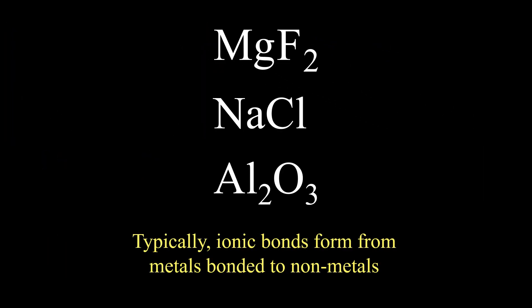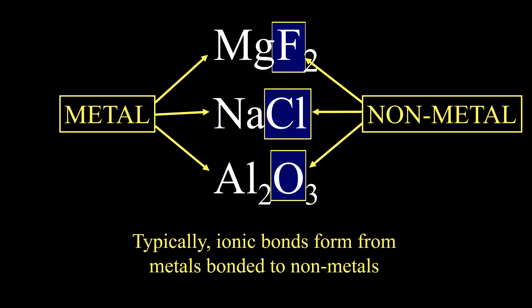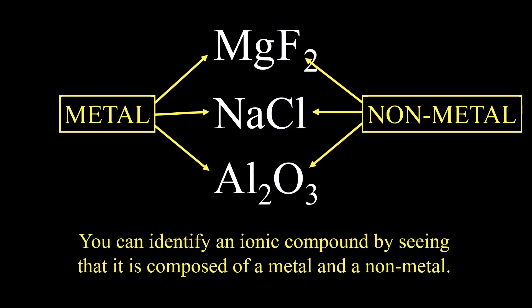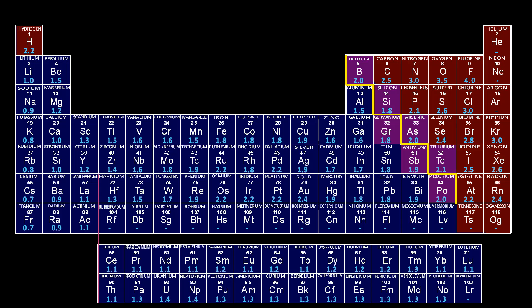Typically ionic bonds form from metals bonded to nonmetals. You can identify an ionic compound by seeing that it is composed of a metal and a nonmetal, and this is because metals form cations or positive ions and nonmetals form anions, negative ions.